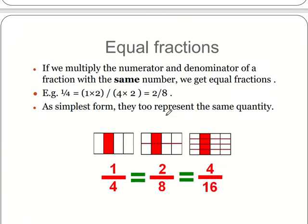Equal fractions. If we multiply the numerator and denominator of a fraction with the same number, we get equal fractions. For example, 1 by 4 is equal to 1 multiplied by 2, over 4 multiplied by 2, which is equal to 2 by 8. At simplest form, the two represent the same quantity. As you are able to see, 1 multiplied by 2 is equal to 2, and 4 multiplied by 2 is equal to 8. And when we multiply 2 by 2 again, we get 4, and 8 multiplied by 2 again we get 16. But the quantity will remain the same.